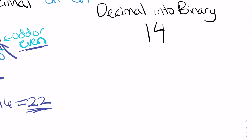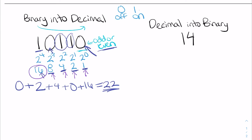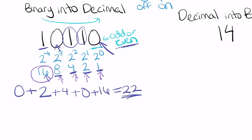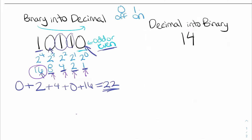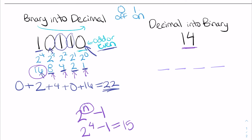For decimal into binary — how many bits do we need to fit 14? It will fit into two to the fourth because the highest number you can make is 15. The highest decimal number you can make with n bits is two to the n minus one. Two to the fourth minus one is 15. Since we use four bits, we know we're going to have a one in the first place. 14 is even, so there's going to be a zero in the first place.